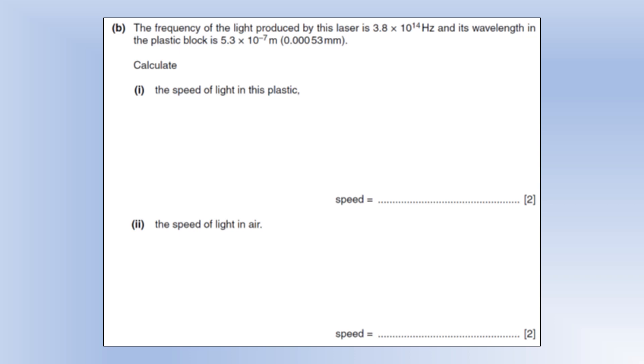The frequency of the light produced by a laser is 3.8 times 10 to the 14 hertz, and the wavelength in the plastic block is 5.3 times 10 to the minus 7. Calculate the speed of light in this plastic. So we're going to use the wave equation again because we've got frequency and wavelength, and then we can calculate the speed from that. So we can see that it's 2 times 10 to the 8.